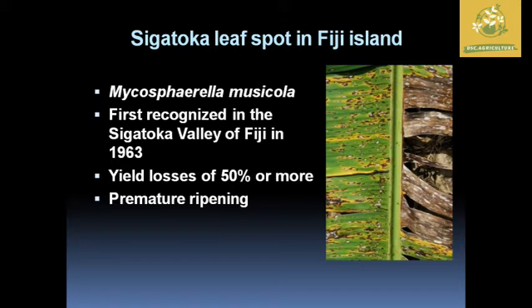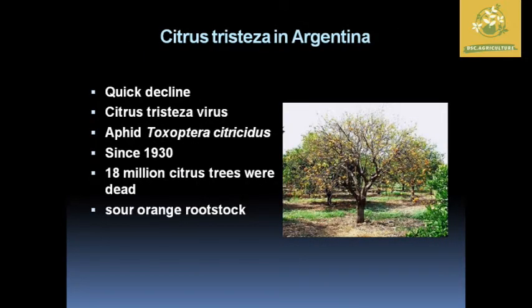The Sigatoka leaf spot in Fiji Island is caused by Mycosphaerella musicola. It was named Sigatoka leaf spot because the first recognized leaf spot of this disease was in the Sigatoka valley of Fiji in 1963. It caused a yield loss of around 50 percent or more, and also caused premature ripening of banana crops.